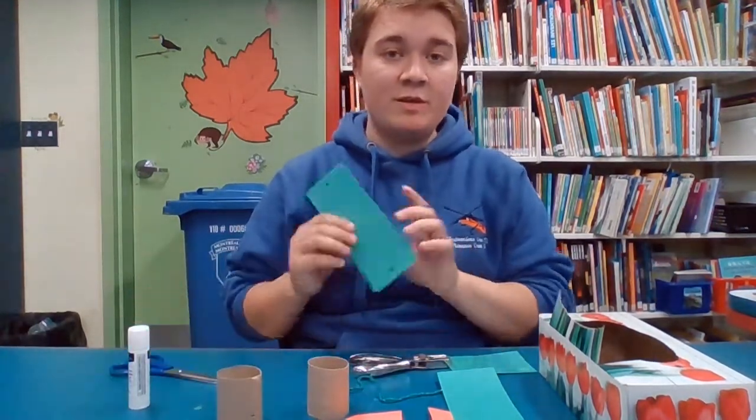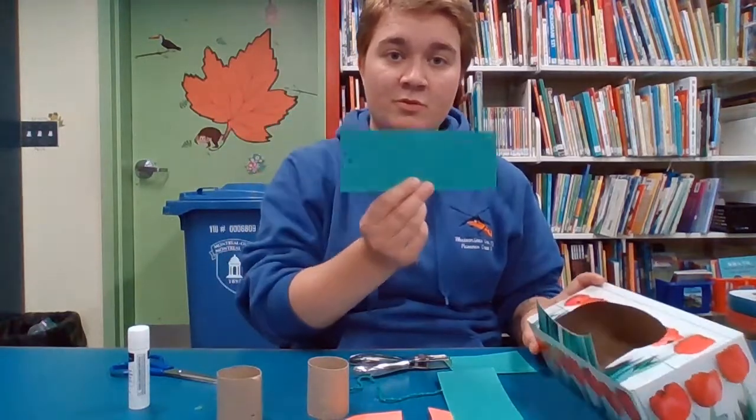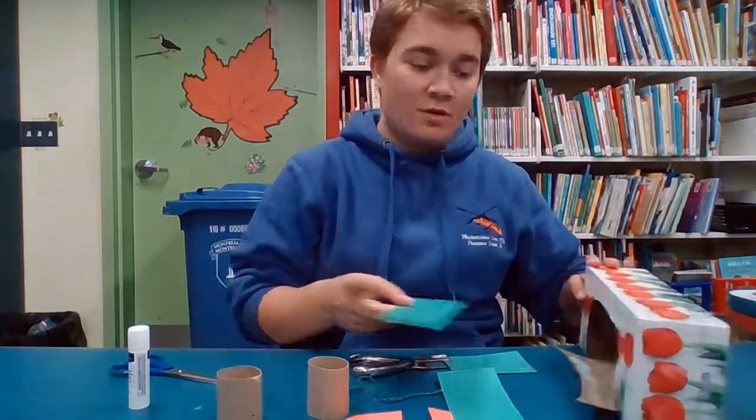We're gonna start by gluing the piece with two holes in it onto the flap, and that's gonna be our drawbridge.